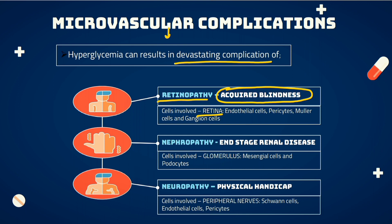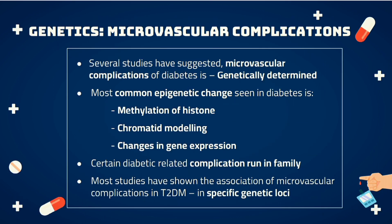The next organ is the kidney, and this complication is known as diabetic nephropathy, which can cause end-stage renal disease or chronic renal failure. The cells involved here are those of the glomerulus: mesangial cells and podocytes. The third devastating complication is neuropathy, which can make the person physically handicapped. The cells involved are peripheral nerves, Schwann cells, endothelial cells, and pericytes.